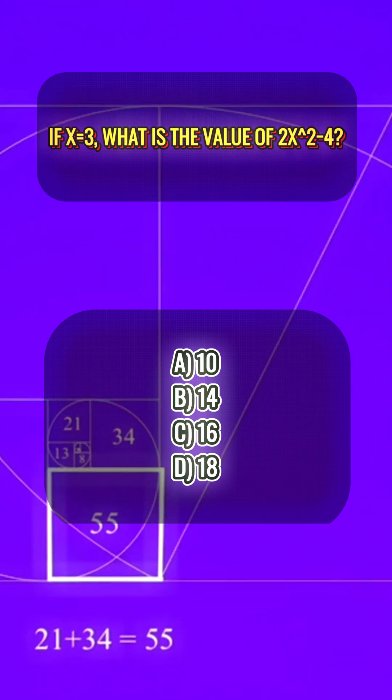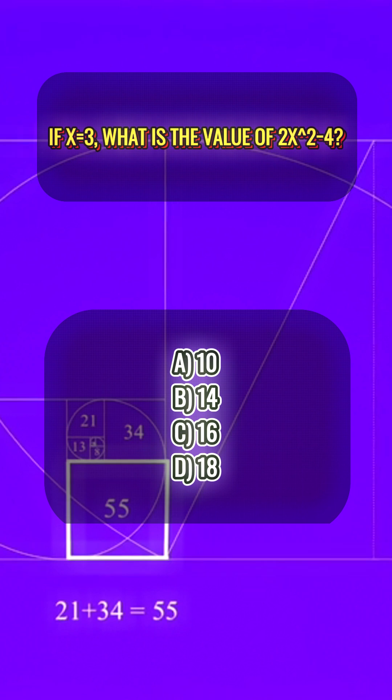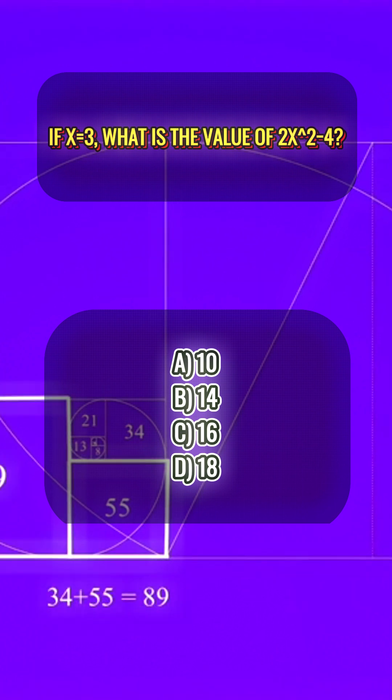If x equals 3, what is the value of 2x to the power of 2 minus 4? A, 10. B, 14. C, 16. D, 18.